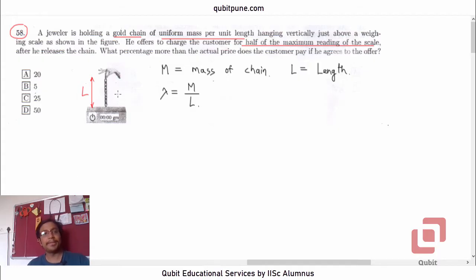Now observe that when the jeweler releases the chain and the whole portion lands on the weighing machine, the reading will be equal to the weight of the chain. But the problem suggests he is going to pay something more, so the reading will be greater than the actual weight. Why is that? Because the momentum of the chain as it falls down due to gravity, that momentum is stopped by the weighing machine.